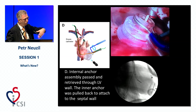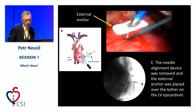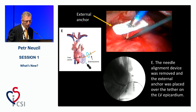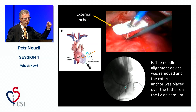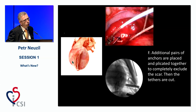The internal anchor is placed from my side — the jugular side — going down and placed on the right ventricular septum. Then the surgeon places from his side, from the outside, the external anchor. After the first pair of internal and external anchors, they can put the second, third, and more. Finally, the left ventricle — the aneurysm — can be clearly excluded.